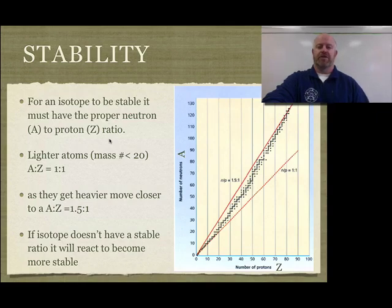...that ratio starts to shift through these different weights. So for our lighter atoms, things that have a mass number of less than 20, so we're looking at basically up to like calcium, so our lighter atoms, we only want a ratio of one to one.